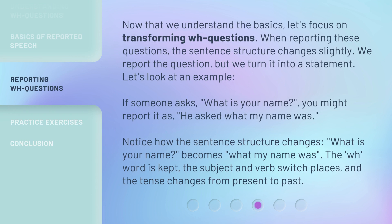Now that we understand the basics, let's focus on transforming WH questions. When reporting these questions, the sentence structure changes slightly. Basically, we report the question but we turn it into a statement. For example, if someone asks 'What is your name?' you might report it as 'He asked what my name was.' Notice how the sentence structure changes: the WH word is kept, the subject and verb switch places, and the tense changes from present to past.